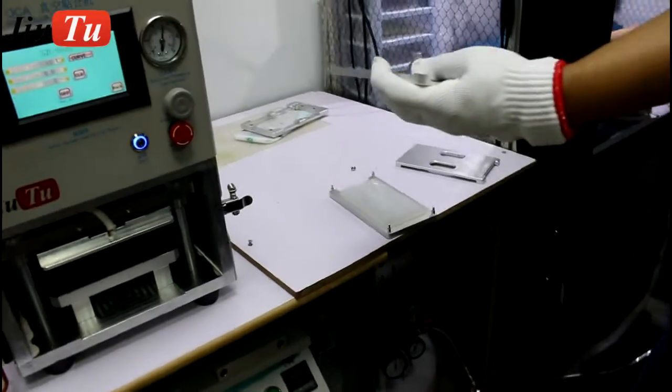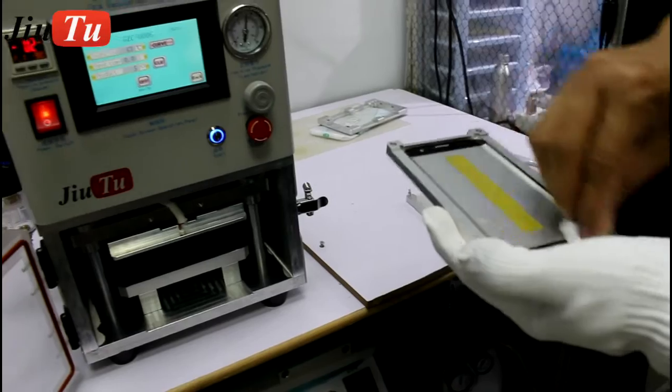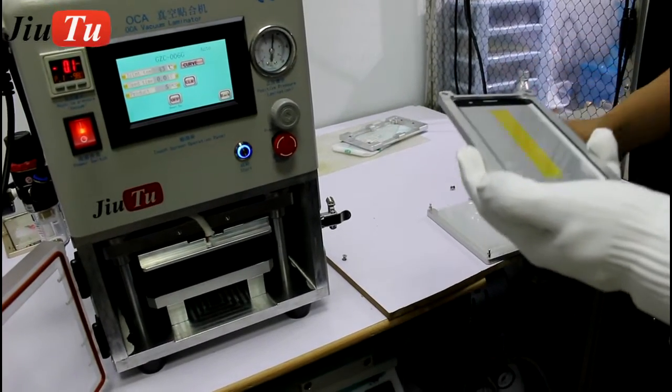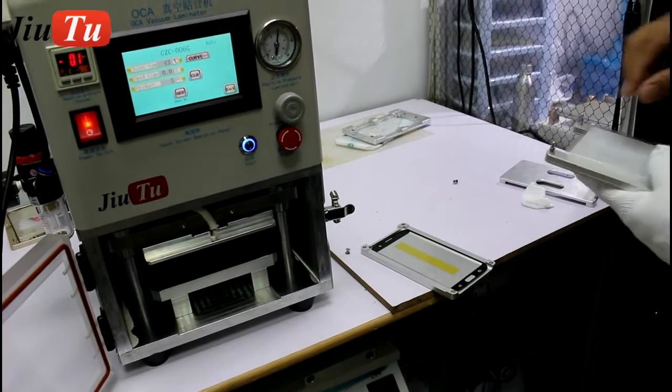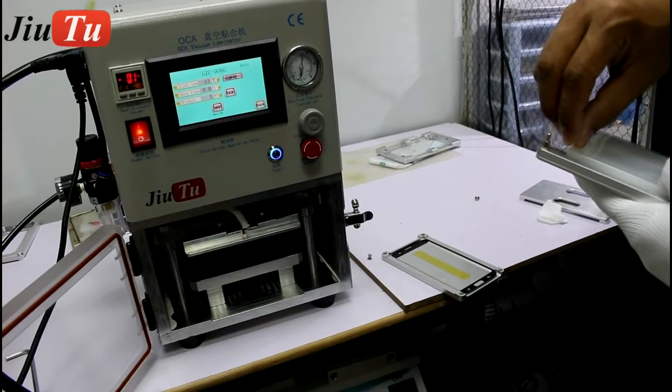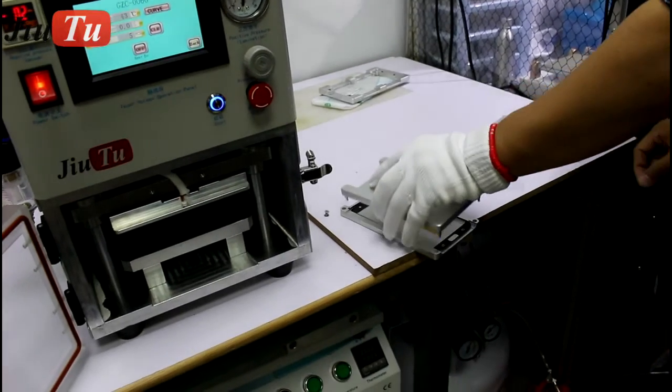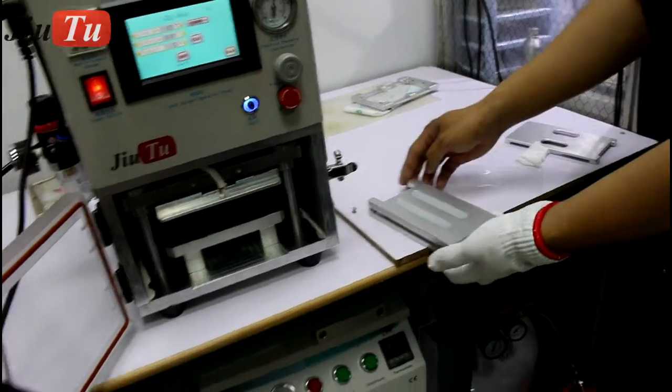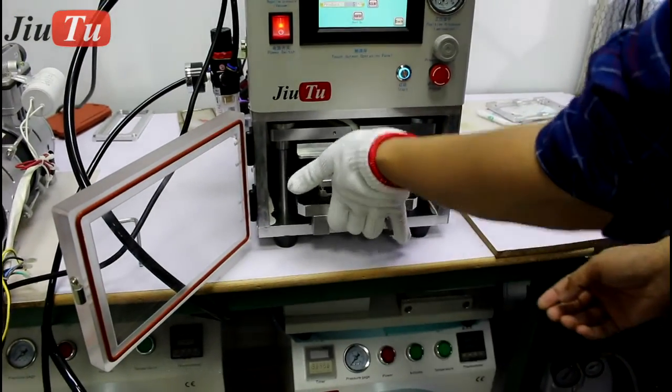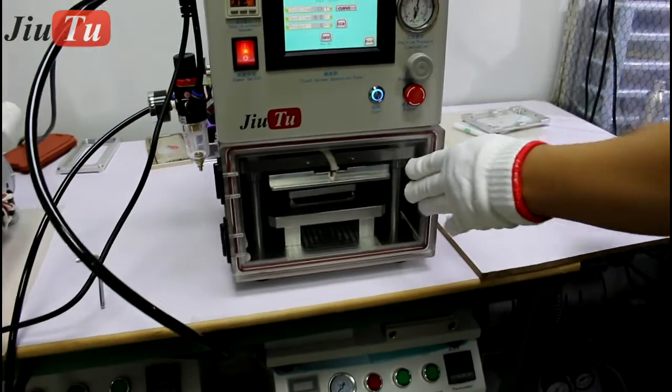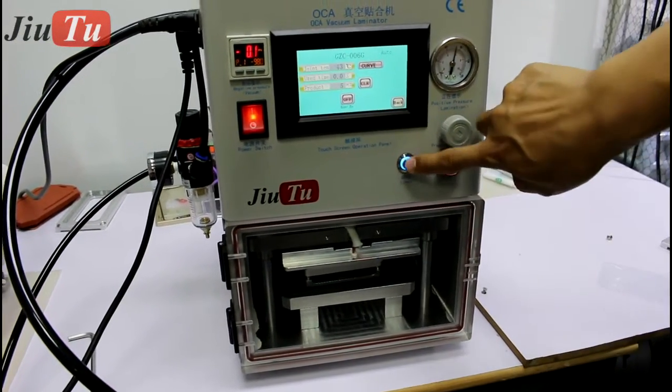Make alignment for the OCA film and the glass. Cover it together and put inside this universal mode. And inside the machine. Close the door. And click start.